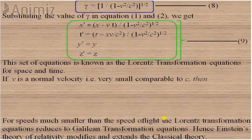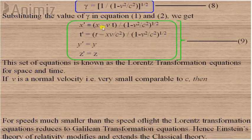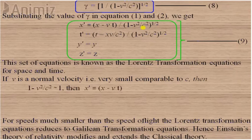Substituting this value of gamma into the equations for x' and t', we get the Lorentz transformation equations: x' equals (x minus vt)/√(1 minus v²/c²), t' equals (t minus xv/c²)/√(1 minus v²/c²), y' equals y, z' equals z. Comparing with Galilean transformation — where x' equals x minus vt, y' equals y, z' equals z, t' equals t — the Lorentz transformation applies to very high velocities comparable to the speed of light, while Galilean applies to normal speeds.